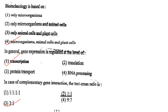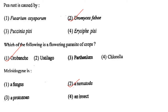Next one: In case of complementary gene interaction, the test cross ratio is option 1, 1:1:1; option 2, 1:1; option 3, 3:1; option 4, 9:7. Answer is option 3: 3:1.